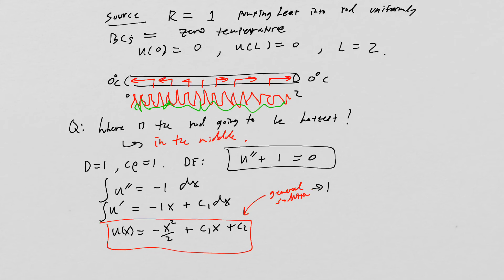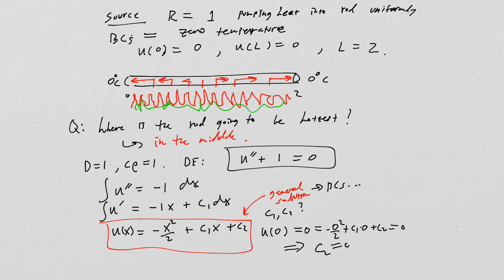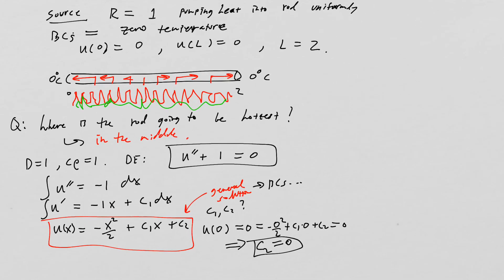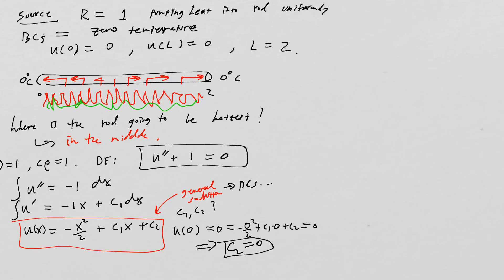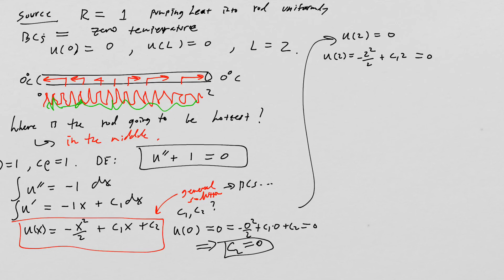Now we apply boundary conditions. At u(0) equals zero: plugging in gives c₂ equals zero. At u(2) equals zero: plugging in gives negative four over two plus c₁ times two equals zero, i.e., negative two plus two c₁ equals zero.